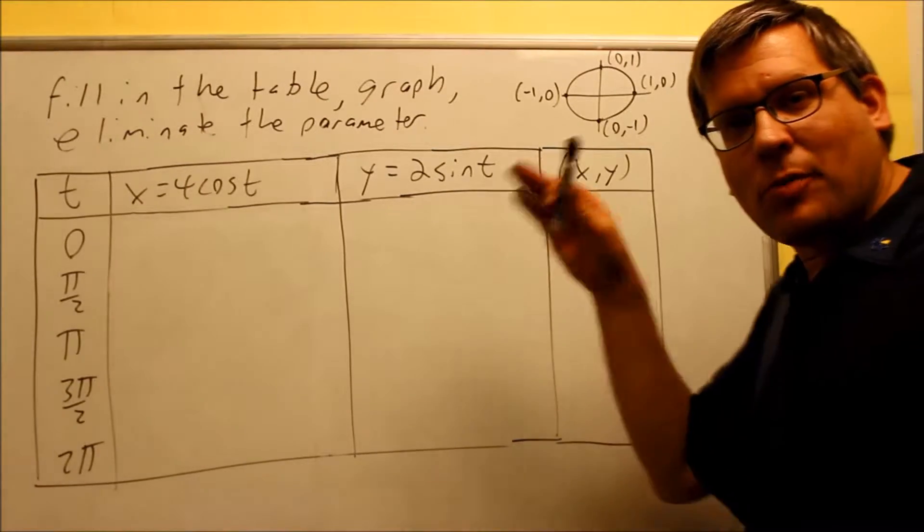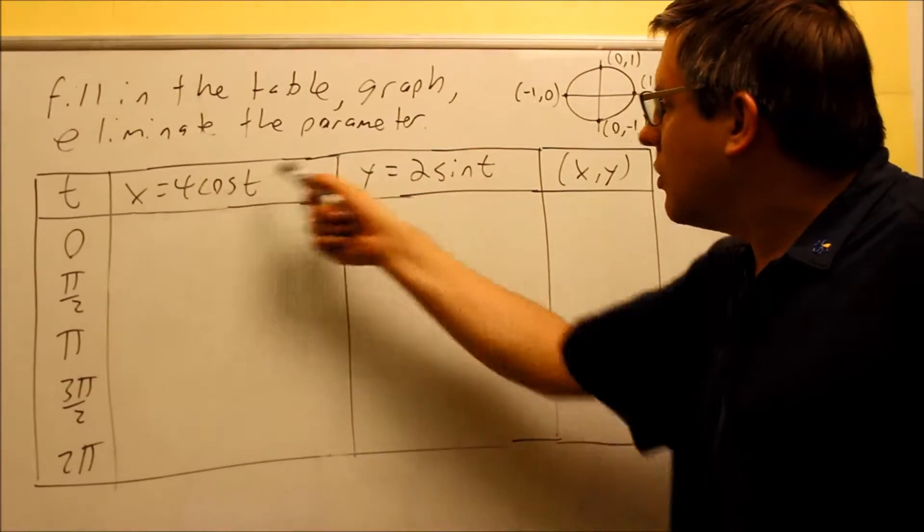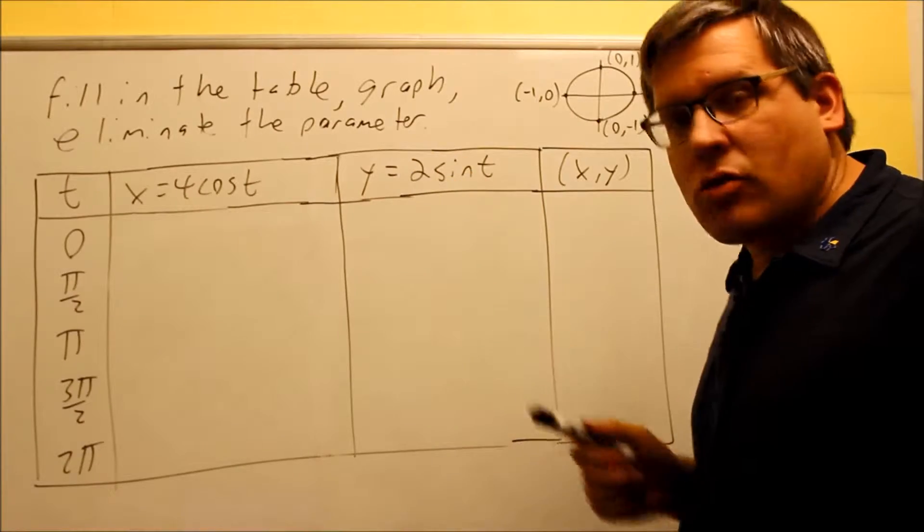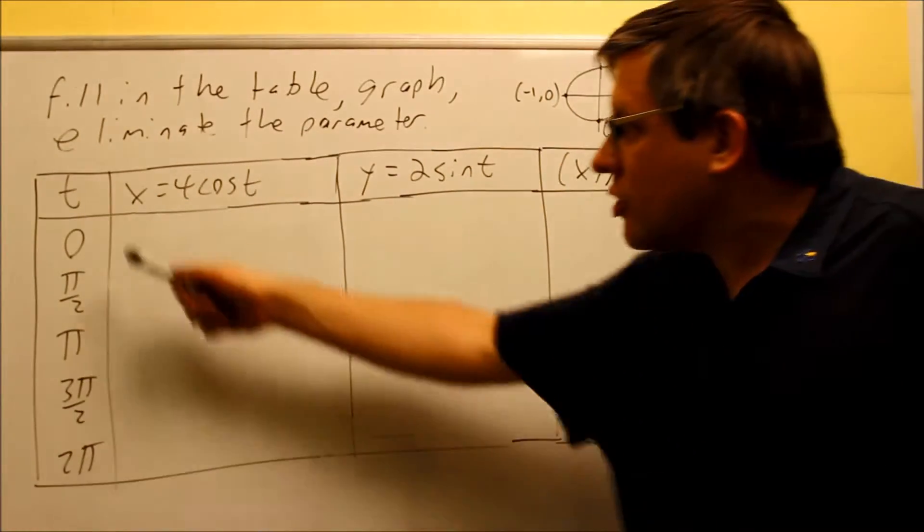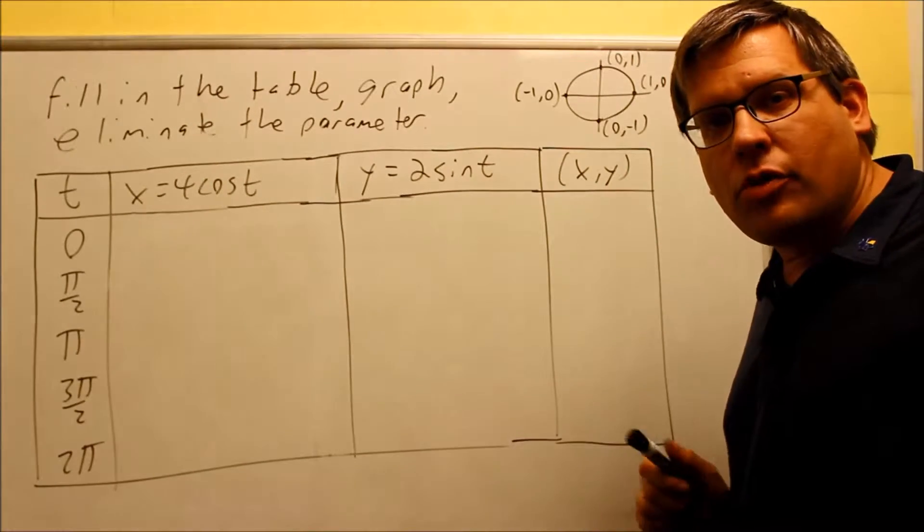Okay, this next example is a parametric equation, but it involves sines and cosines. And we also have some values for t that are here. These are going to be values coming from the unit circle.